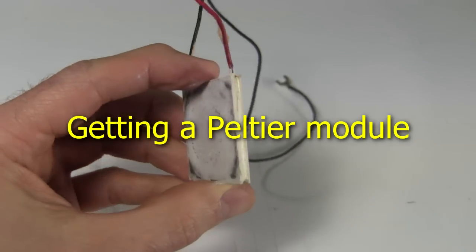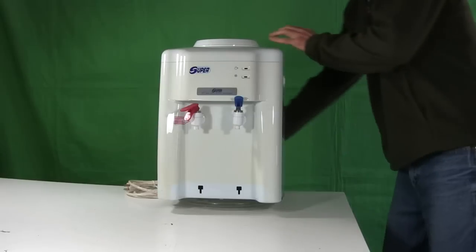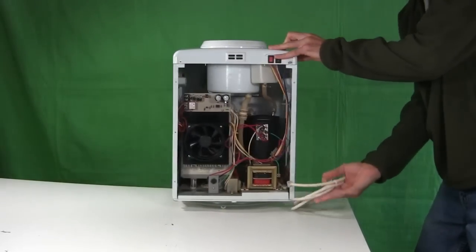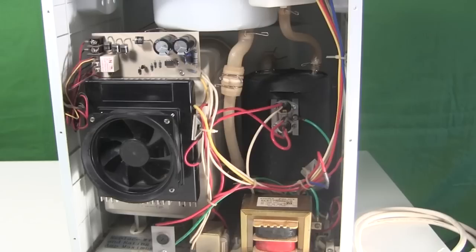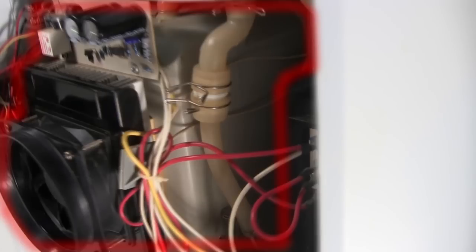You can buy Peltier modules from a variety of places online or from electronics stores. But I found my module in this hot and cold water dispenser. The water is heated in here using heating elements, but the cooling is done in here using a Peltier module.